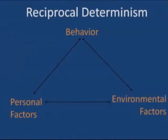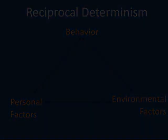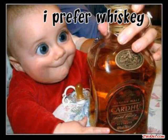Bandura believes that individuals are both products and producers of their own environments and social systems. Social cognitive theory is centered on the idea that we are agents and have control over our own development and behavior. It seems a simple concept, but anyone who has tried to change an unhealthy behavior knows that it's anything but.